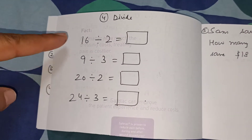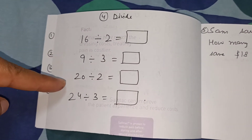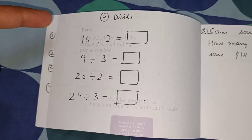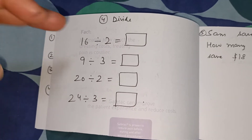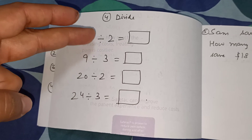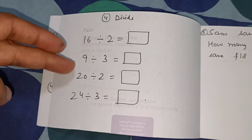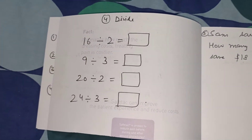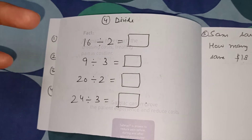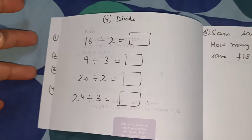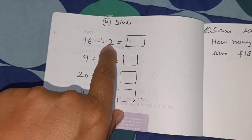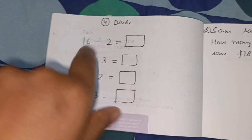Simple division. She knows skip counting by 2 and 3, so we are just practicing that. We're introducing the concept of the division symbol and getting her to start thinking about division. Basically we're telling her why she learned skip counting.